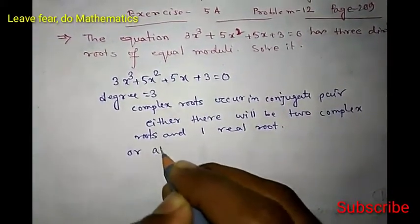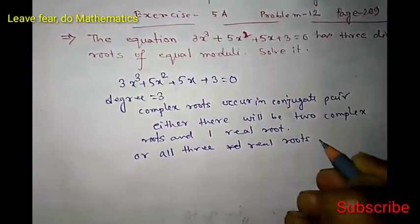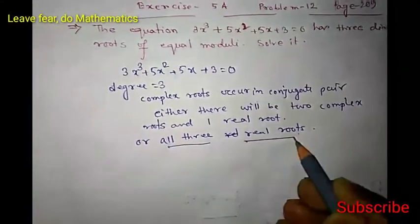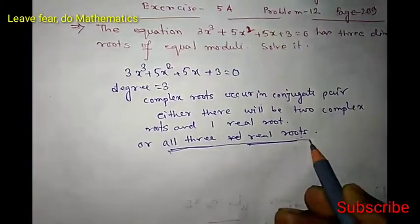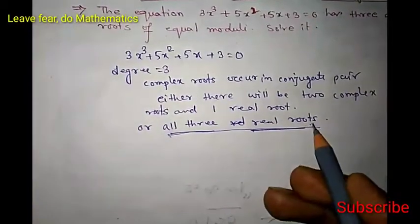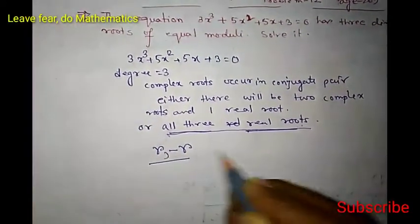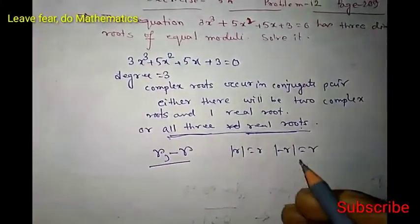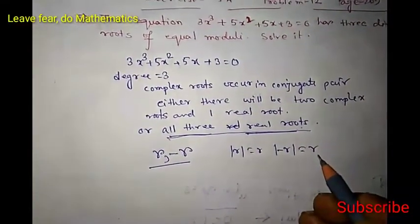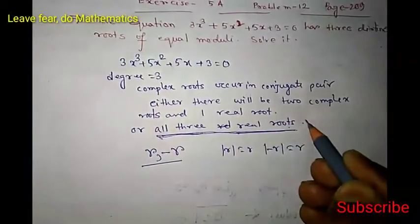Or, all three real roots — but is this case possible? What is given is that the roots are of equal modulus. We would need three real numbers of equal modulus. But we can get at most two real numbers, namely r and −r, which have the same modulus. There is no other real number whose modulus will be r. So we cannot get three distinct real numbers having the same modulus, since the roots are given as distinct. Therefore, all three real roots are not possible.